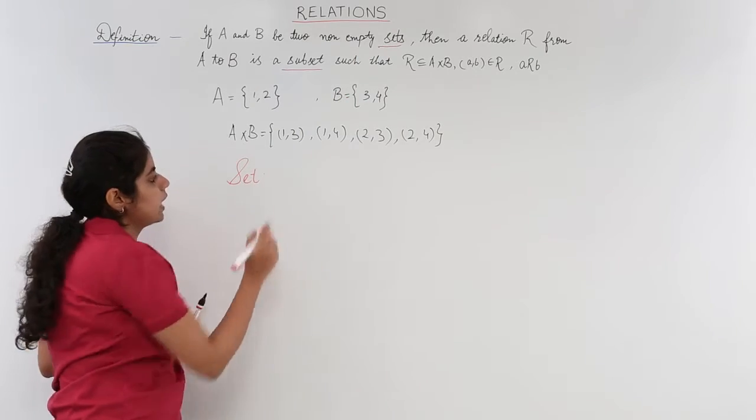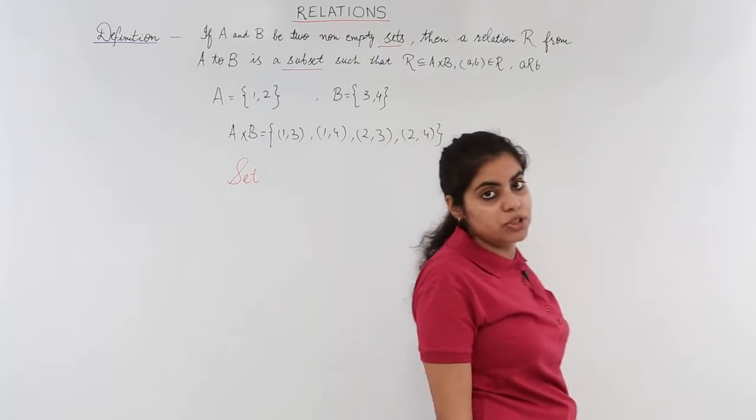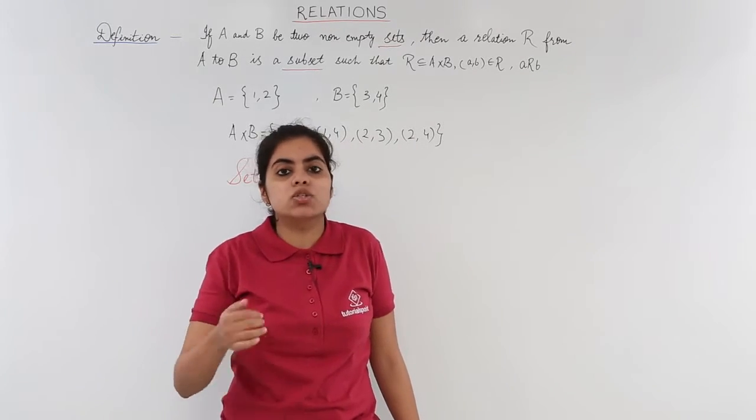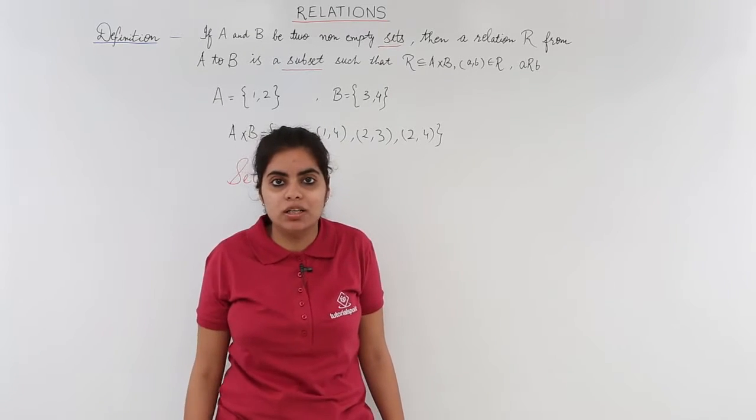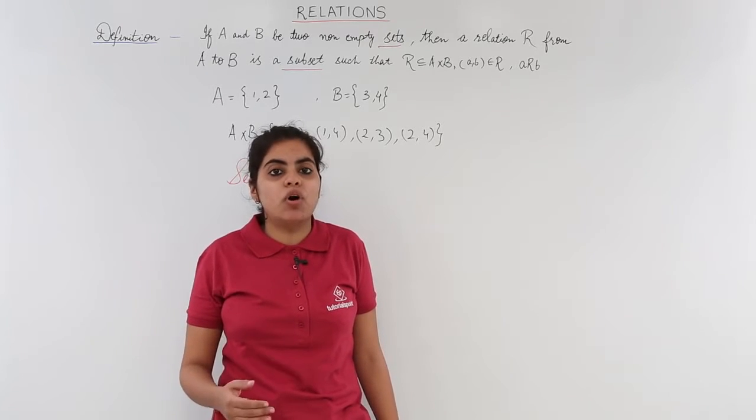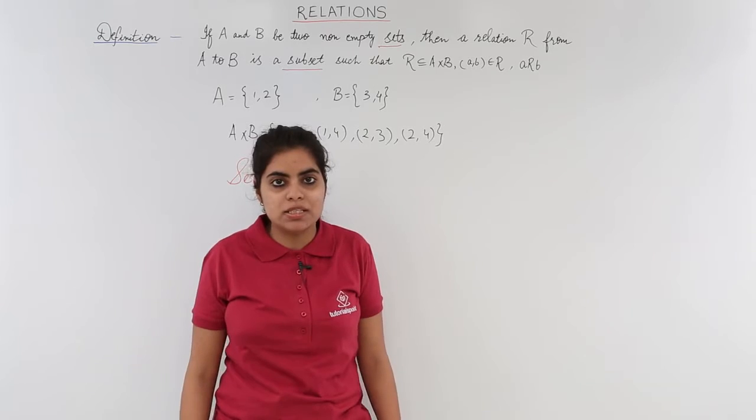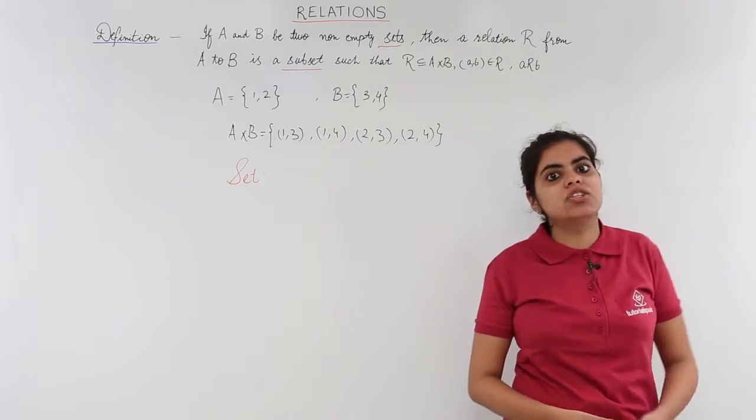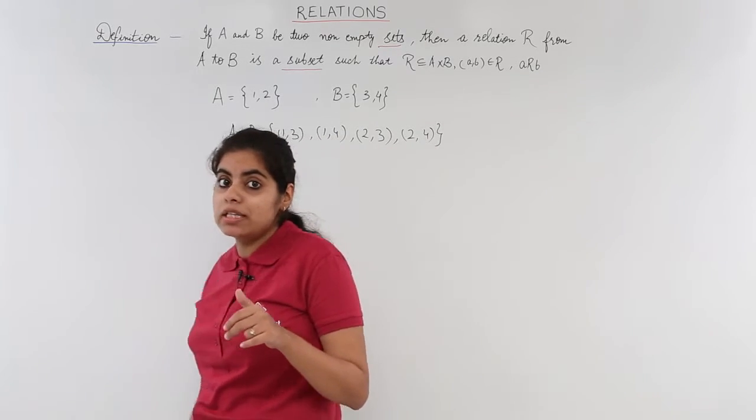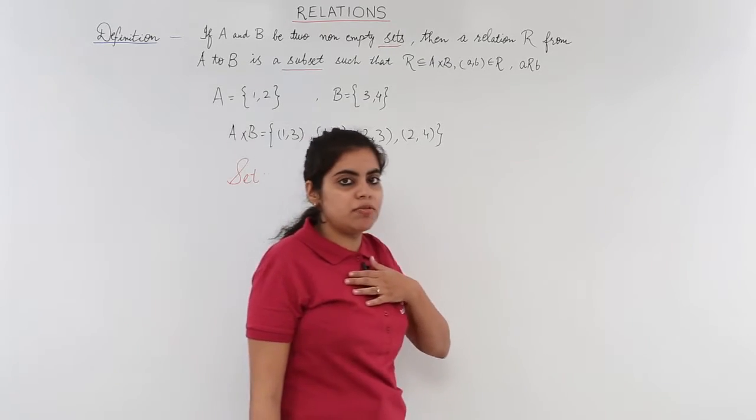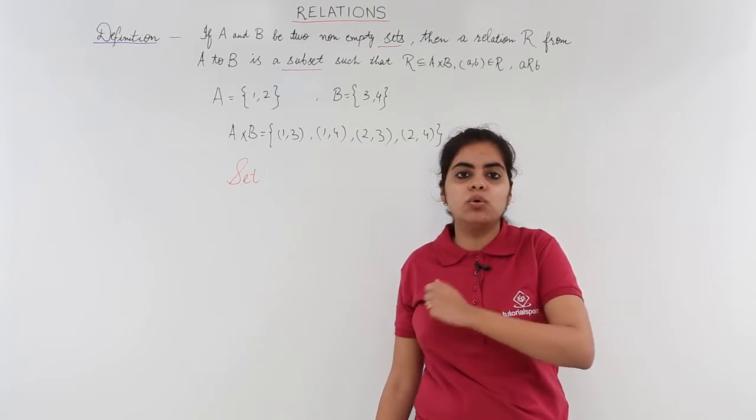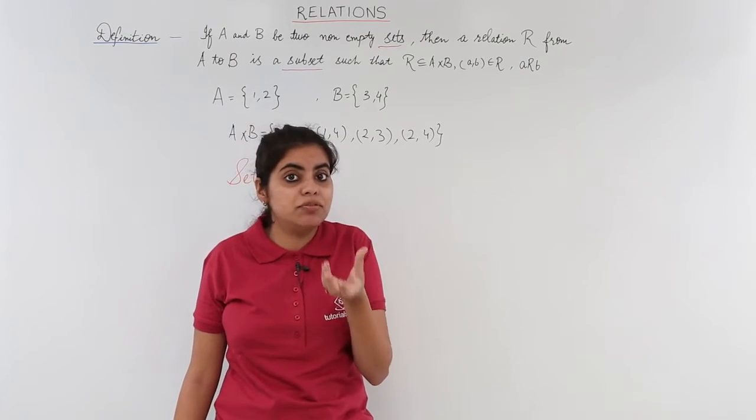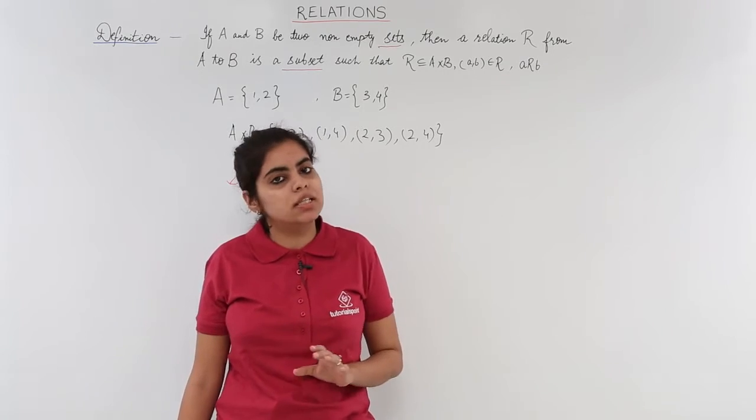Now, set in mathematics means a well-defined collection of objects. Example would be set of girls in a boys' school which would be an empty set because in a boys' school there would be no girl, or if I say set of all good apples from a basket of apples, this is a well-defined set. But if I say set of all dangerous animals of the world, this would not be a well-defined set. Why? Because for me, I may find an animal dangerous but for the other person who does not have the fear of animals may not find it dangerous. So, you understand that well-defined, this word has very much importance in the definition of set.